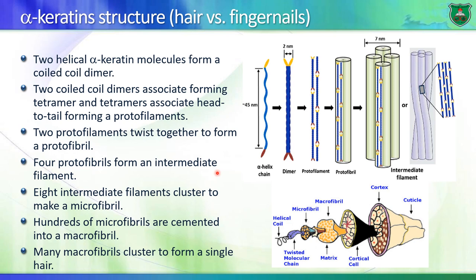How do keratins look? Two alpha-helical chains form a coiled-coil dimer. Two coiled-coil dimers form a tetramer, and these tetramers associate head to tail forming a protofilament. Two protofilaments form a protofibril, and four protofibrils get together forming the basic structure of intermediate filaments. These intermediate filaments get together forming microfibrils, microfibrils form macrofibrils, and macrofibrils form a single hair.